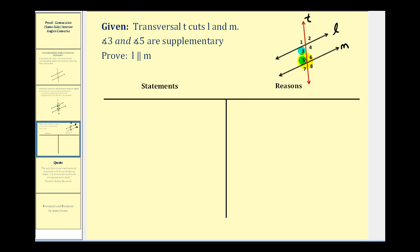Let's talk about our strategy before we begin. We just proved the alternate interior angles converse, which states that if angles three and six are congruent, then the lines would be parallel, or if angles four and five are congruent, the lines would be parallel. So if angle three and angle five are supplementary, and if angle five and six are also supplementary because they form a linear pair, we stated earlier that if two angles are supplementary to the same angle, then they must be congruent. So angle three and angle six are both supplementary with angle five, and therefore they would be congruent. That's the outline of our proof.